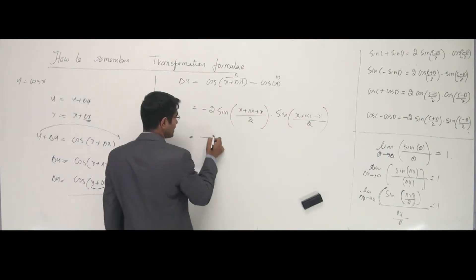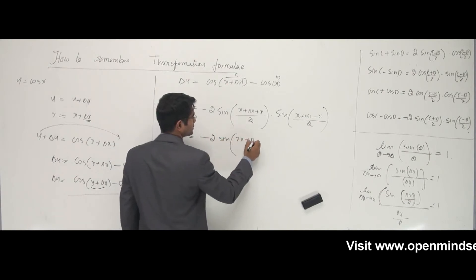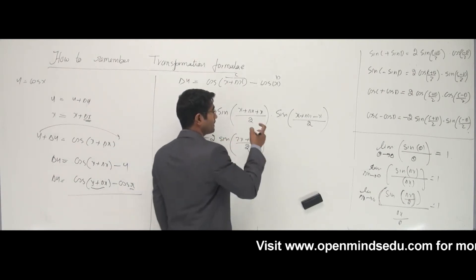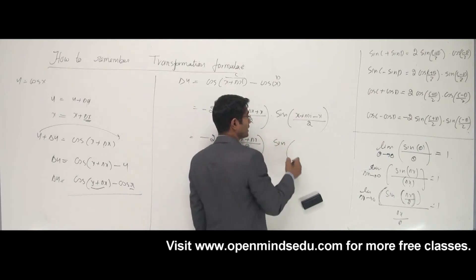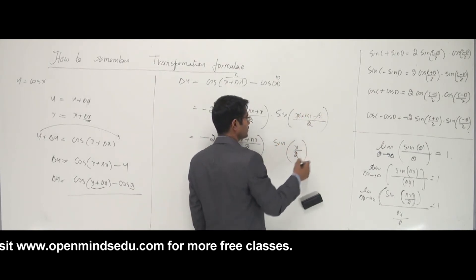Coming back to this, I have minus 2 sine of 2x plus delta x by 2, times sine of delta x by 2, after canceling.